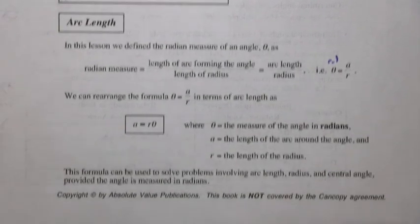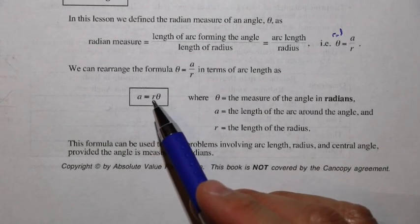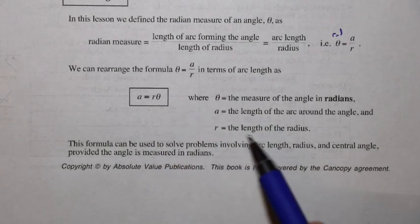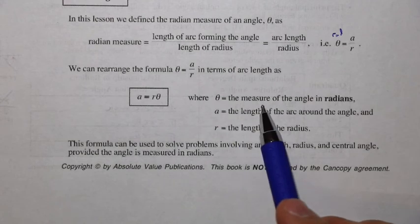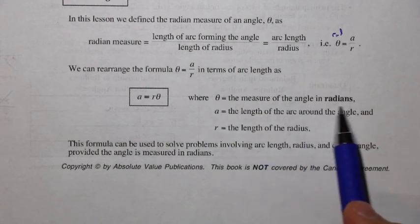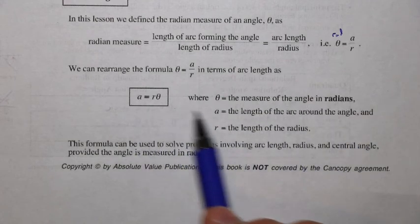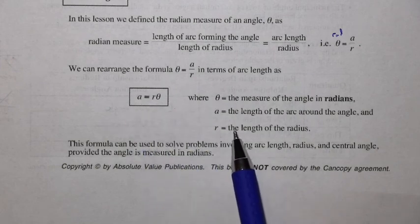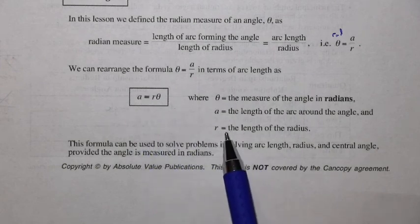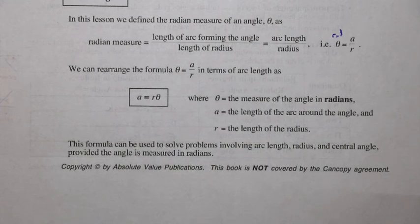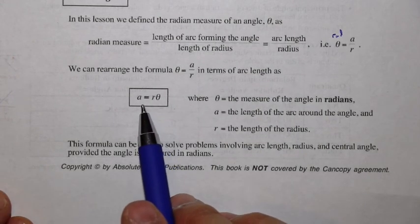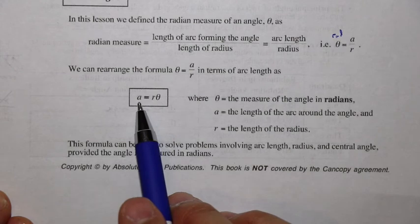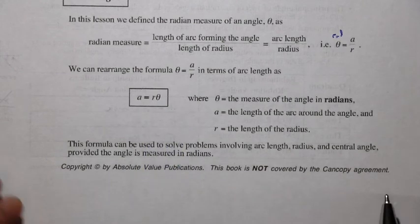We can rearrange that formula to get a = rθ. So theta is the measure of the angle in radians, a is the length of the arc around the angle, and we find that by multiplying the radius r times the angle in radians. We can use this formula to solve for any one of these three values as long as we have the other two.